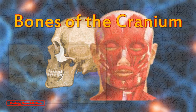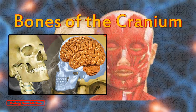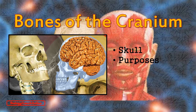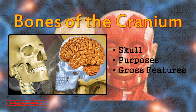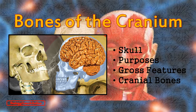In this lecture we will describe the gross structure of the skull and define its purposes as protector of the brain and support for the special senses. We will identify several of the major features or landmarks of the skull which will help you locate and identify the bones of the cranium and face. And finally we will locate and identify the eight bones of the cranium. So let's get started.